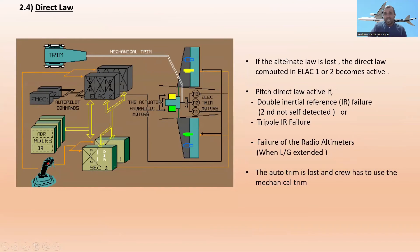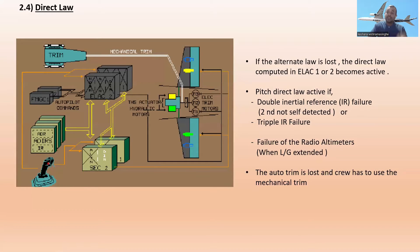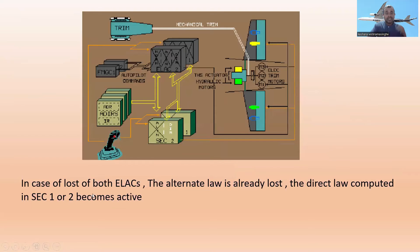2.4 — Direct law. If alternate law is lost, the direct law computed in ELAC 1 or 2 becomes active. Pitch direct law is active if: double inertial reference failure, or triple inertial reference failure, or failure of radio altimeters when landing gear is extended. When direct law is active, auto trim is lost and the crew must use the mechanical trim to control the THS. In case of loss of both ELACs with alternate law already lost, direct law computed in SEC 1 or 2 becomes active.